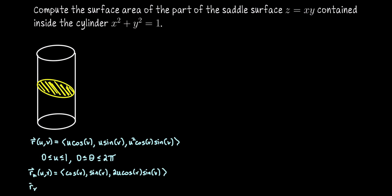Then the partial derivative of this parametrization with respect to v is going to give us the rv vector. And this is going to be negative u sine v, u cosine v. And then here we have to do the product rule. So that's going to be u squared cosine squared v minus u squared sine squared v.